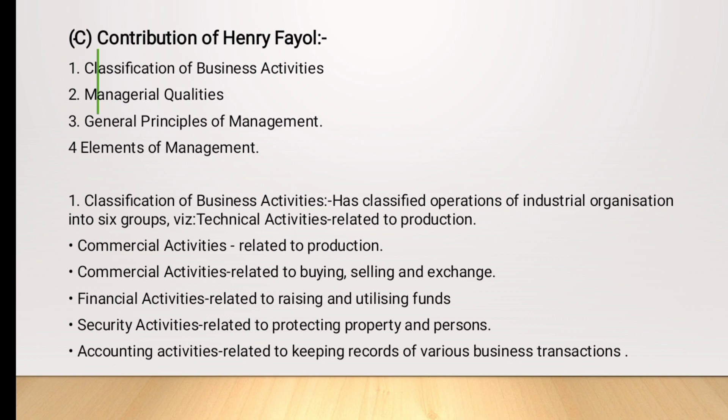Classification of business activity is divided into five groups. First is commercial activity, which is related to buying, production, selling and exchange of various products. Second is financial activity, related to raising and utilizing funds. Third is security activity, related to promoting property and person. Fourth is accounting activity, related to keeping records of various types of business transactions.